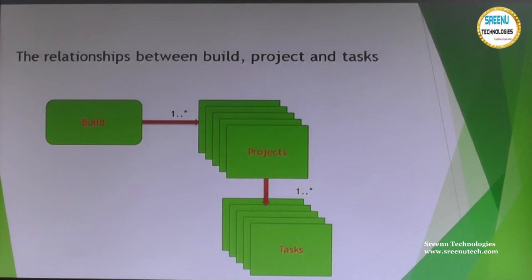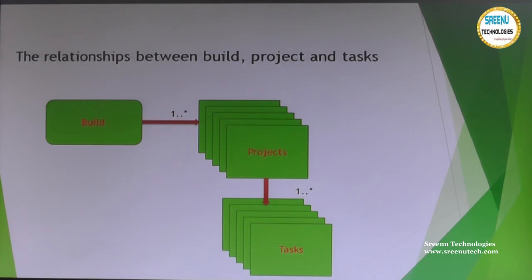One project can have different kinds of tasks. One build can contain different types of projects, which is why we define a one-to-many relationship. A single build contains one or more projects, and each project is divided into different types of tasks.